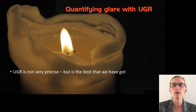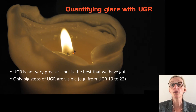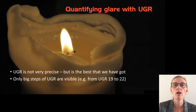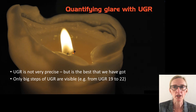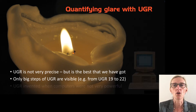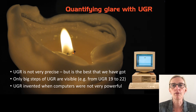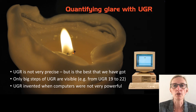UGR is the best method we have, but it will not render very precise results. There is definitely no reason to calculate UGR with decimals. But UGR works well in practice — experience shows that office workers will start to complain when UGR is higher than 20, but will not be able to distinguish small differences. The whole UGR methodology is from 1995, when advanced lighting design software was not available. Hence, there was a need to find practical solutions, and the tabular method was developed.